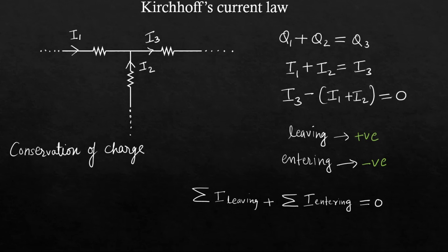Whenever we are considering entering current, we will associate a negative sign with those automatically. So the net current through a node should be zero. The entering current should be equal to the leaving current. So this is all about Kirchhoff's current law.